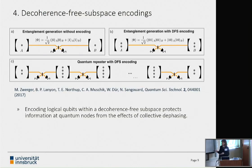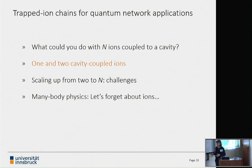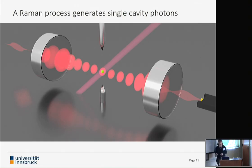There are many good reasons to work with multiple ions, and we're fortunate that this is really a strength of these ion trap systems. I want to tell you what we've done with just a few ions coupled to an optical cavity. This is work based on a Raman process generating single cavity photons.